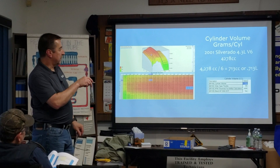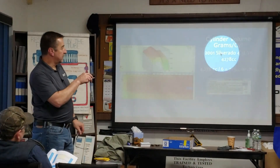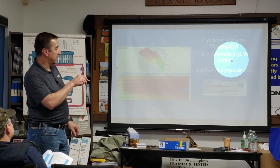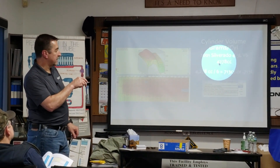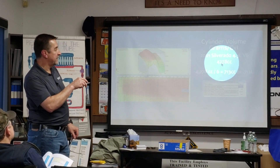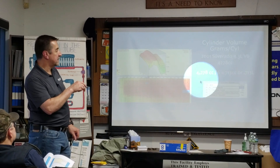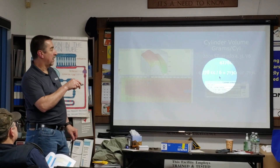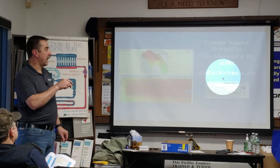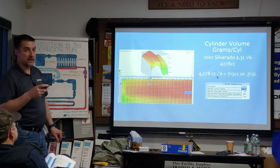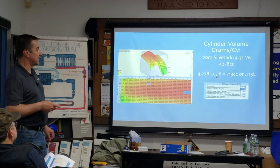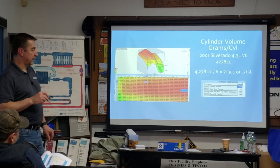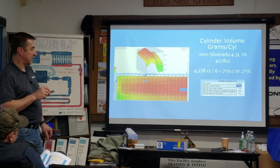We've got this 2001 Silverado — this is what we're going to be looking at. It's actually 4,278cc. All you need to do is divide that by six, because we have six cylinders, and that comes out to 0.713.